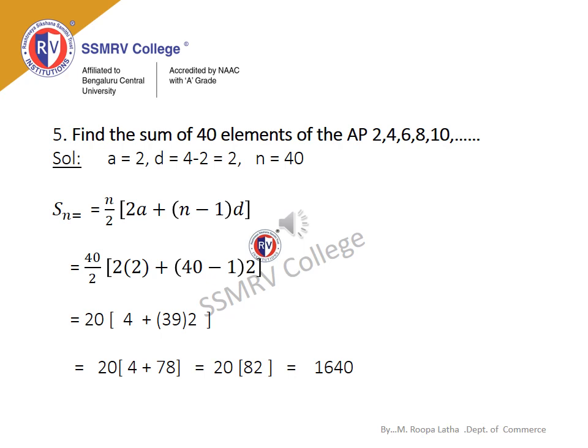Problem: Find the sum of 40 elements of the AP: 2, 4, 6, 8, 10, and so on. Here a = 2, d = 4 − 2 = 2, n = 40. Using Sₙ = n/2 × [2a + (n−1)d]: S₄₀ = 40/2 × [2(2) + (40−1)(2)] = 20 × [4 + 39 × 2] = 20 × [4 + 78] = 20 × 82 = 1640.